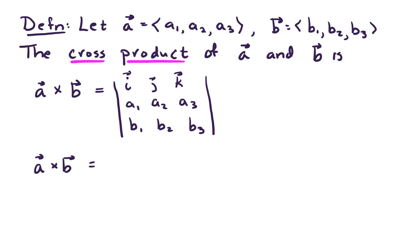Second row, A1, A2, A3. And the third row, B1, B2, and B3. So let's work out what that would be.